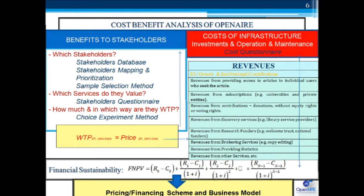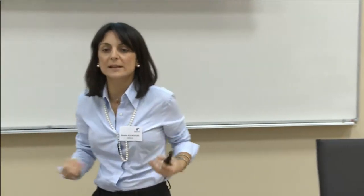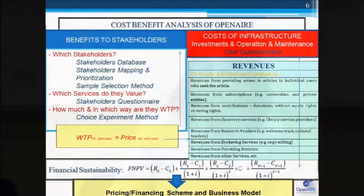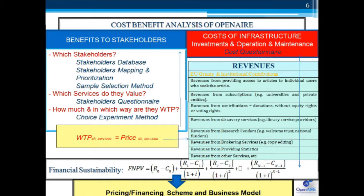Unless you do all this, you cannot really identify a sustainable business model. I tried to put everything in one slide. We have the open air infrastructure — open air plus — and we have it because somebody believes that it creates benefits to stakeholders, but it also costs something. Who are the stakeholders? This question will be answered through the stakeholder database we've created, through the stakeholders mapping, prioritization, and analysis that we already conducted.